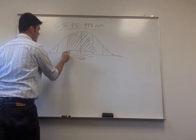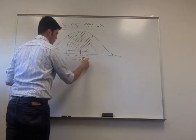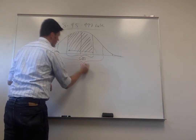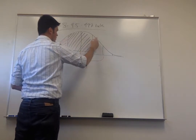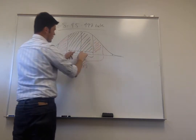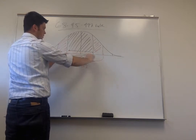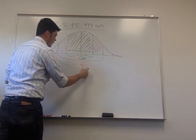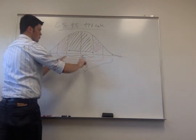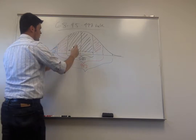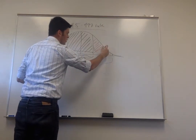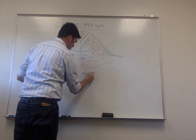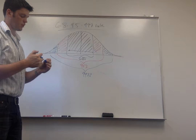If you go out to two standard deviations in both directions, that's going to equal 95%, including the area going from the mean to both standard deviations. And then if you go out to three standard deviations on both sides, that area is equal to 99.7% of the area underneath the curve.